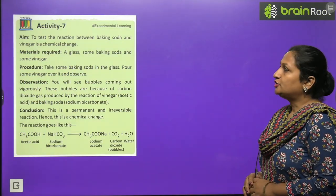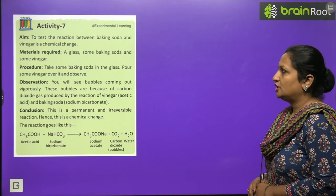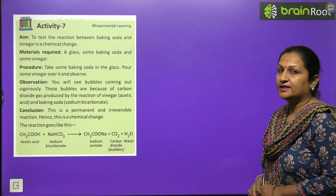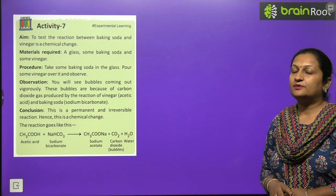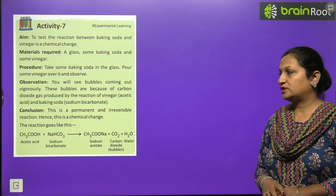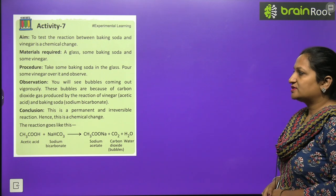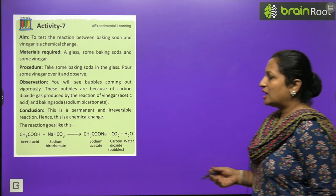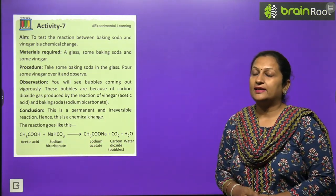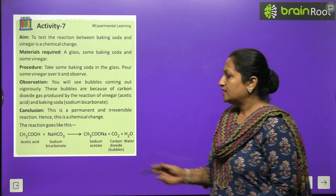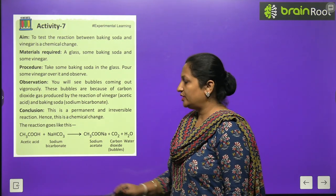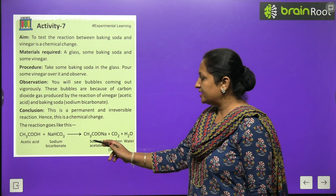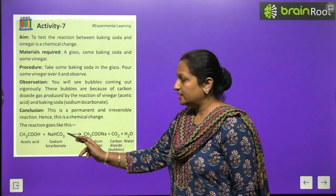Activity: Testing that the reaction between baking soda and vinegar is a chemical change. Take a glass, add some baking soda, and pour in some vinegar. You will see bubbles forming - these are because carbon dioxide gas is produced by the reaction of vinegar (acetic acid, CH3COOH) and baking soda (sodium bicarbonate, NaHCO3). This is a permanent and irreversible change - hence it is a chemical change. The hydrogen in the acid is replaced by sodium, forming sodium acetate, plus carbon dioxide and water.